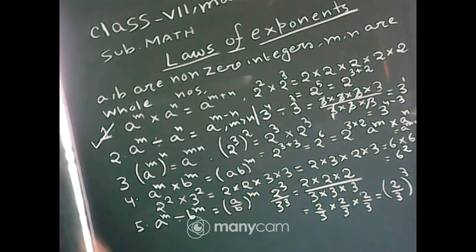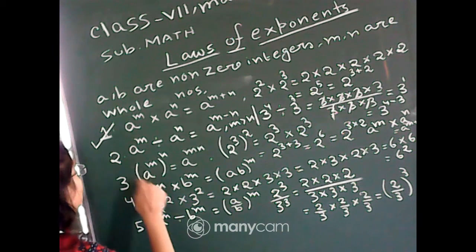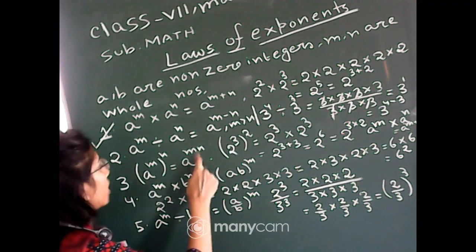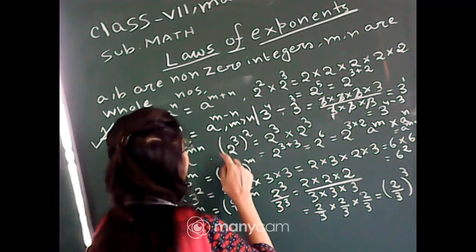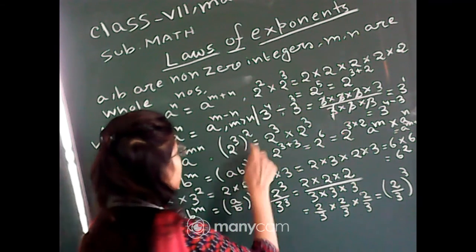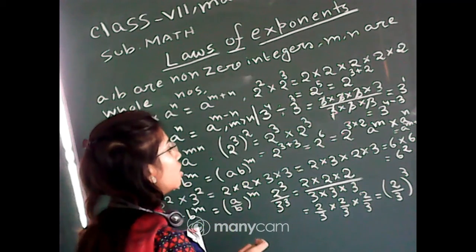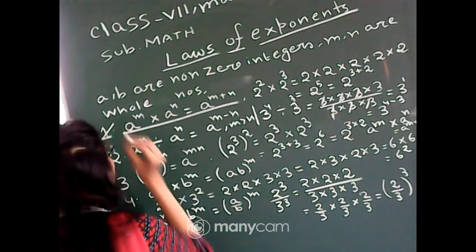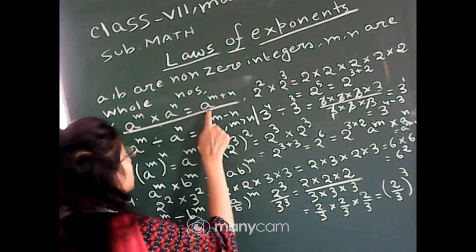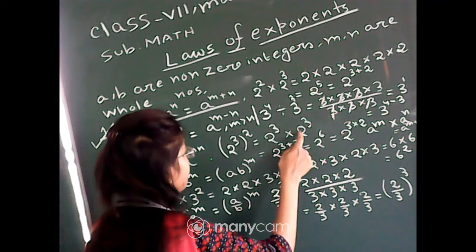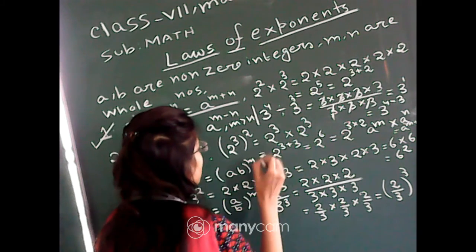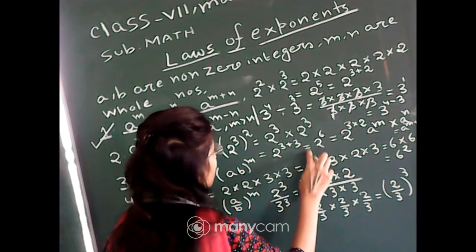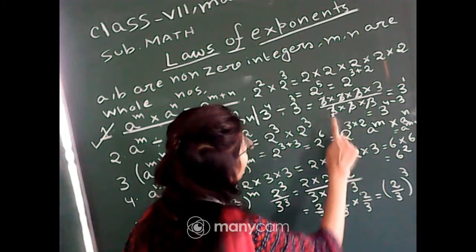The third law — taking power of a power: if a is any non-zero integer and m, n are whole numbers, then a to the power m whole to the power n equals a to the power m×n. For example, 2 cube whole square equals 2 cube into 2 cube. Using law 1, since the bases are same, this is 2 to the power 3 plus 3, which equals 2 to the power 6, that is 2 to the power 3 into 2.